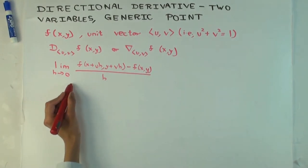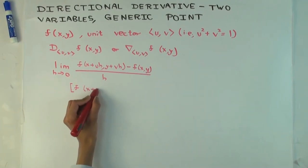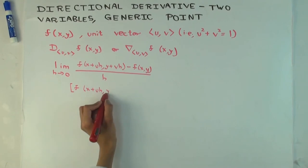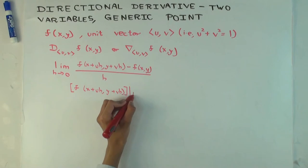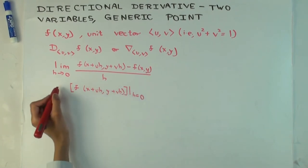Can you think of this as a derivative? It's the derivative of what? [Student responds: f(x+uh, y+vh) at h equals 0.] Yes. But what kind of a derivative is it now? [Student: Derivative with respect to h.] Mm-hmm.